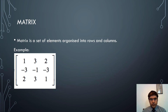Now we move on to the concept of matrices. A matrix is a set of elements organized into rows and columns. For example, a matrix has 3 rows and 3 columns and the whole matrix is enclosed within brackets. Matrices refers to the plural of matrix, a concept you may have come across in physics and mathematics.